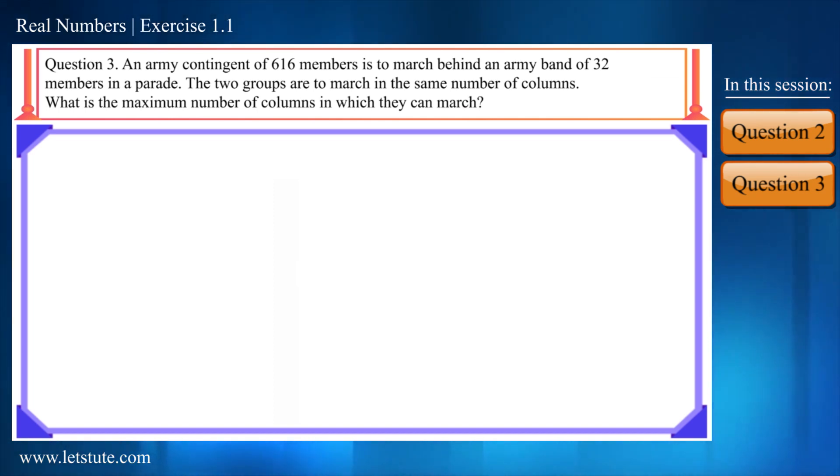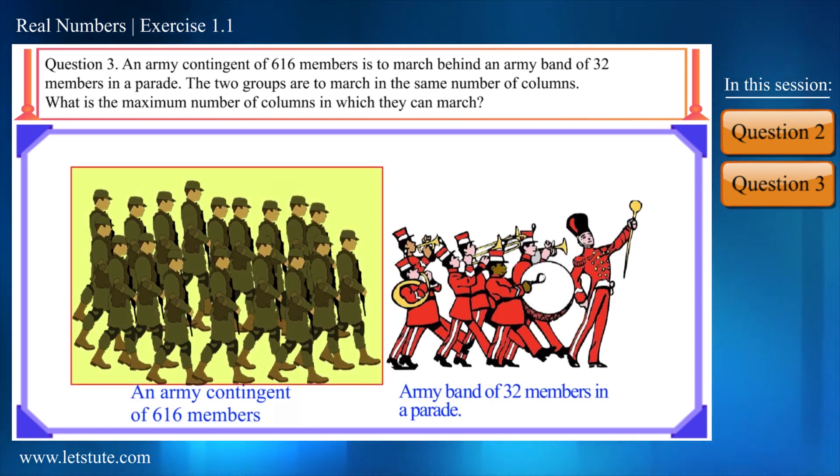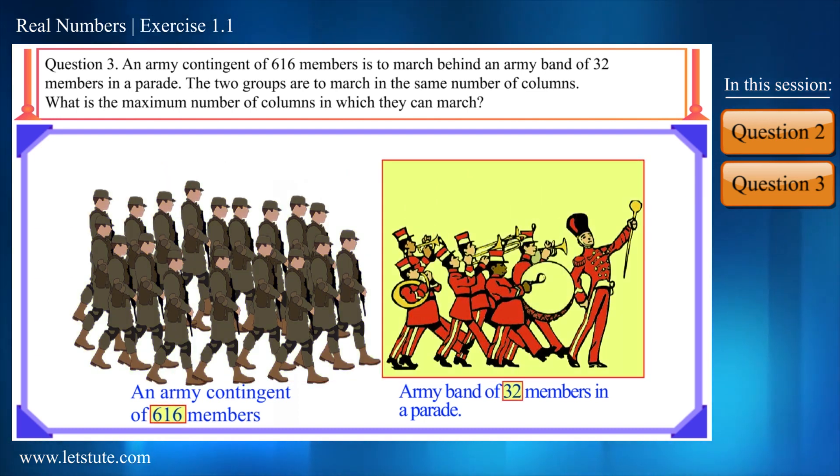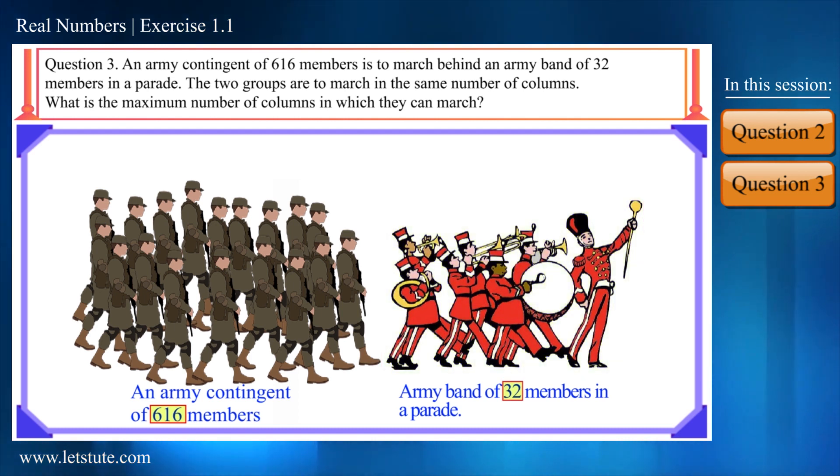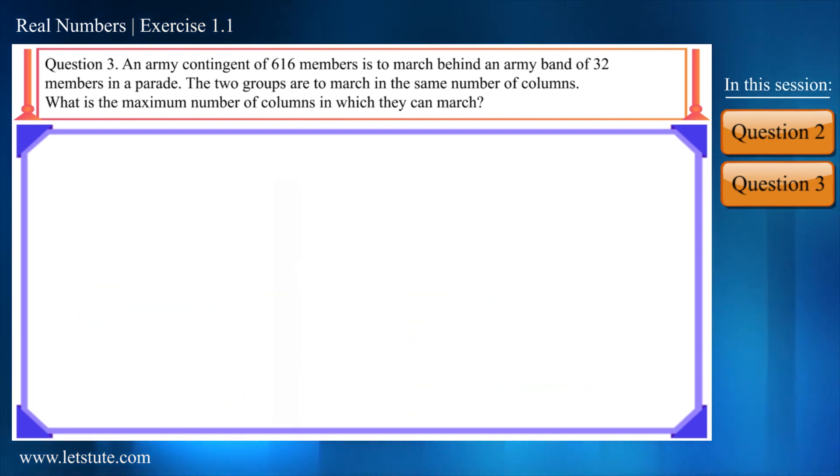Friends, according to question, an army contingent of 616 members is to march behind an army band of 32 members in a parade. Here if we find the HCF of these two numbers then we can find the maximum number of columns in which they can march. So that means now we will have to find the HCF of 616 and 32.